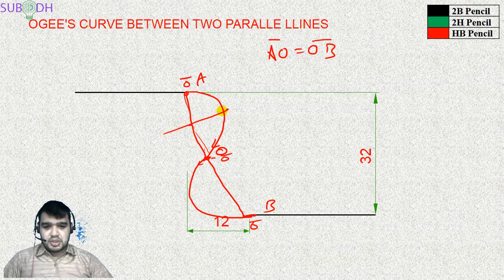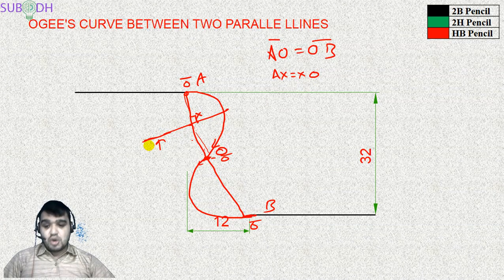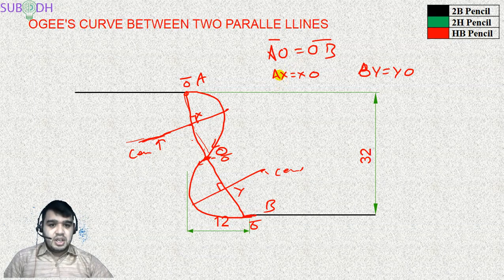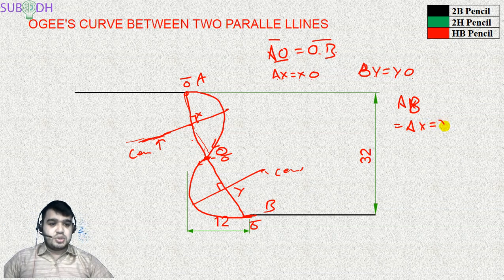This line is a perpendicular bisector of a chord. Chord AB has a perpendicular bisector. AX will equal XO, and this is perpendicular. Similarly for Y, BY is equal to YO, perpendicular. This line passes through the center. The AO line is divided by AX and XO, and the OB line is divided by YO. My line segment AB is divided into four equal parts: AX equals XO equals OY equals YB.